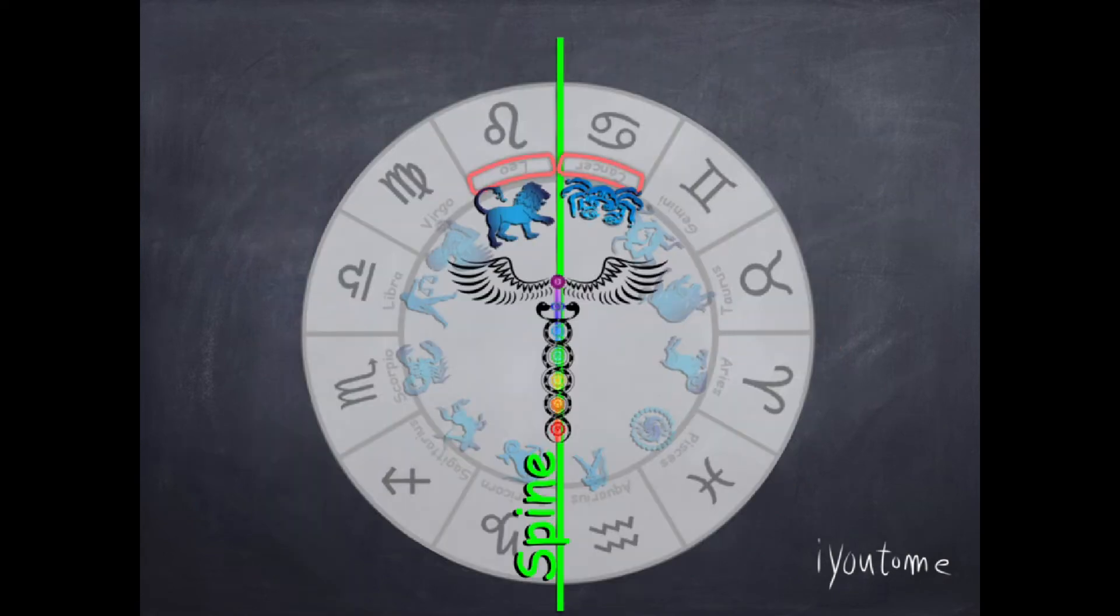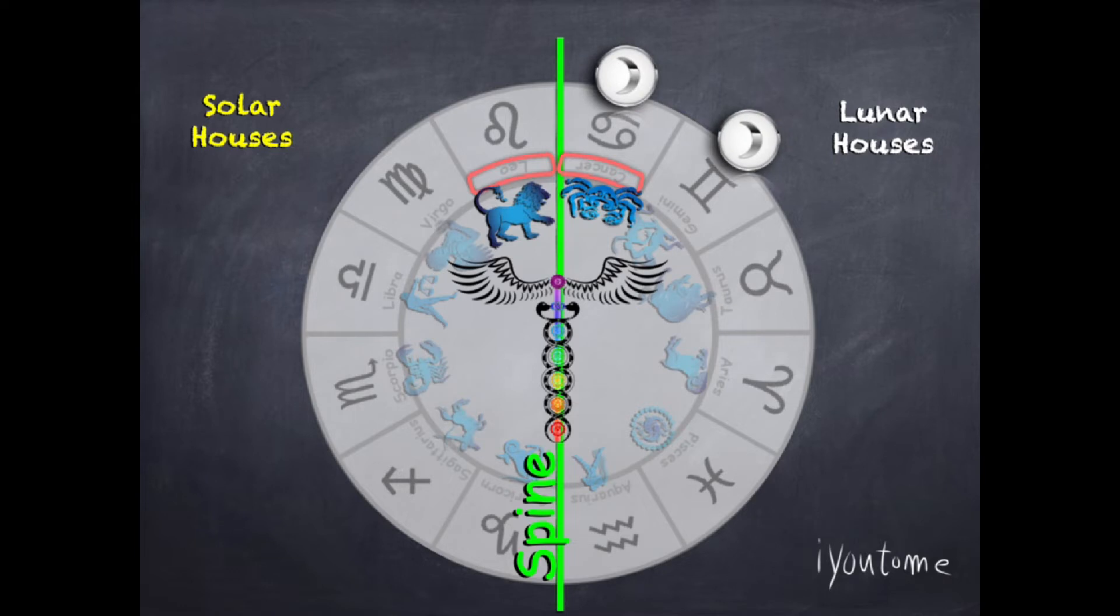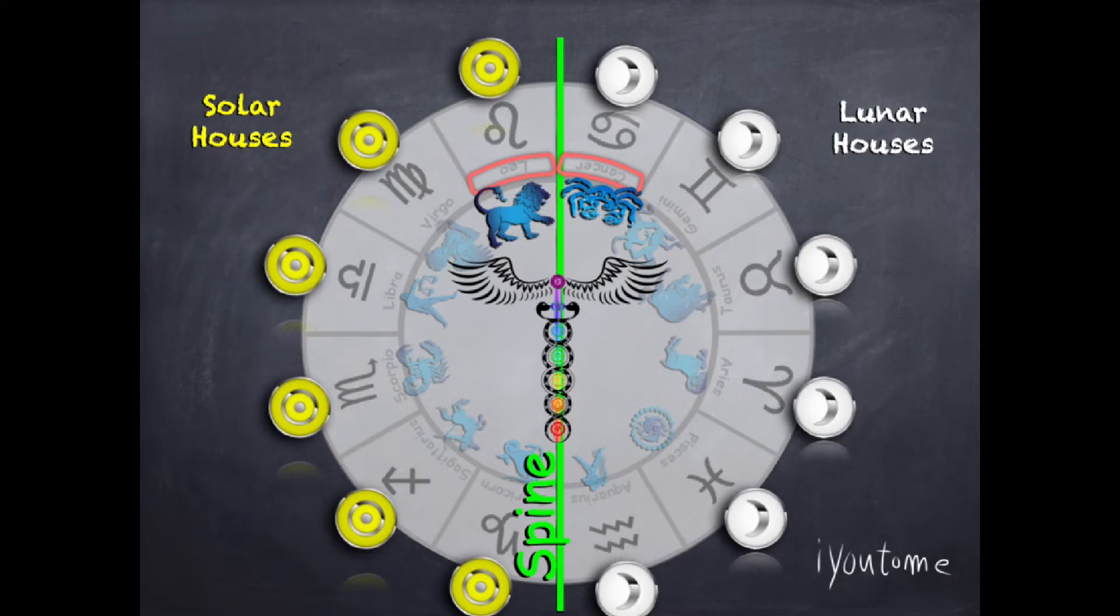Before we wrap up, we will prove what we say. Note that Cancer and Leo split the lunar and solar houses. To the right we have feminine lunar houses. And to the left we have masculine solar houses. We will talk more about this in Astrology 303, but for now know that this was known by the Egyptians.